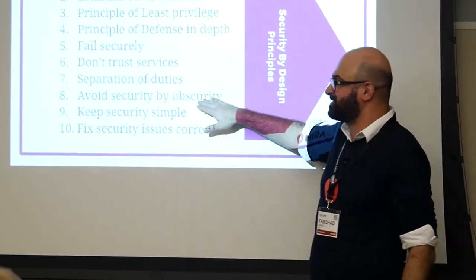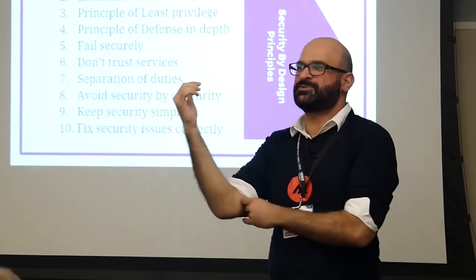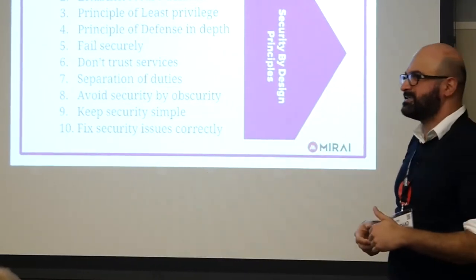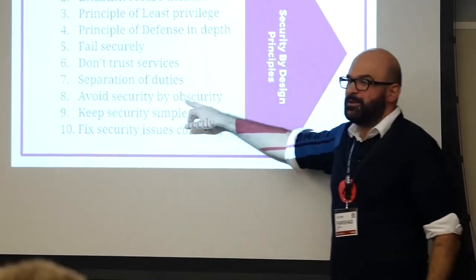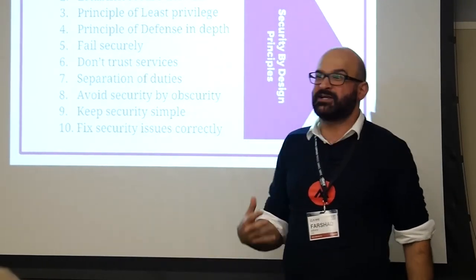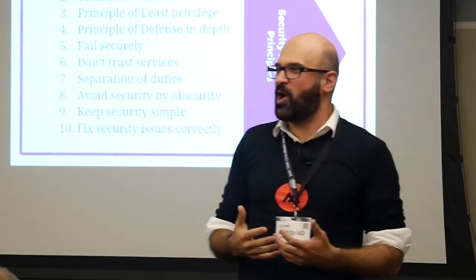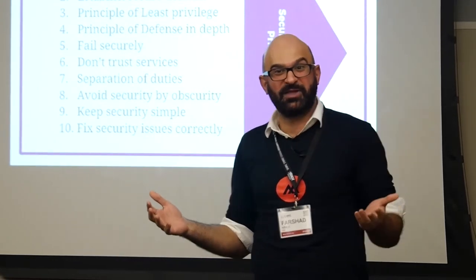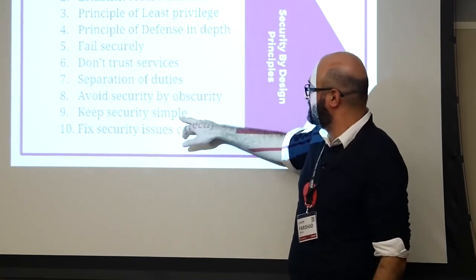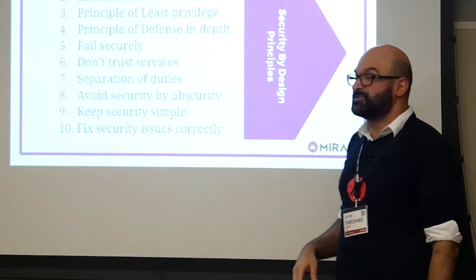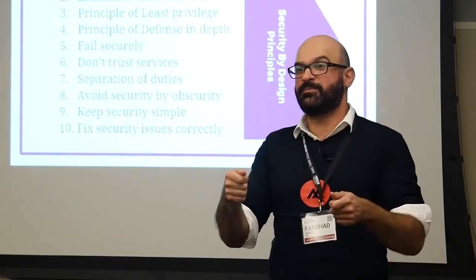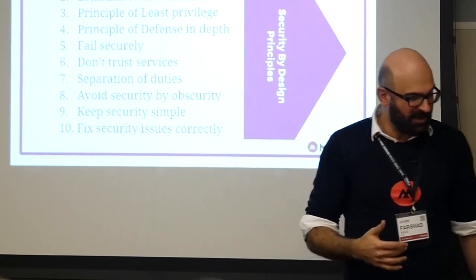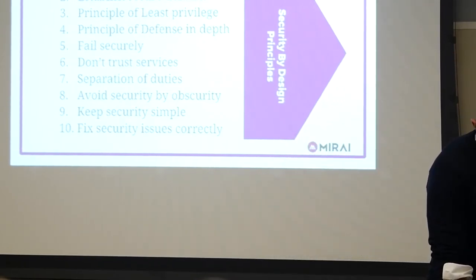You really need a strong trust model figuring out who you trust and who you don't. Separation of duties is common sense. Avoiding security by obscurity — I see this all the time: 'no one knows that IP address' or 'no one's going to know that URL.' People will figure it out through war driving and other techniques. Keeping things simple is important — don't over-architect; if the solution gets really complex you might be the only one who understands it. Finally, fix security issues correctly — when you get that pen test report, sit down with the pen tester, understand the issue fully, and fix it appropriately so it doesn't happen again.